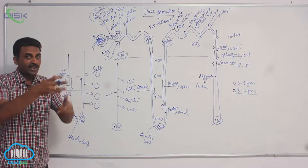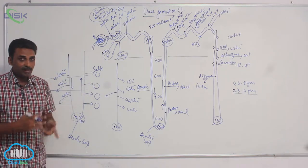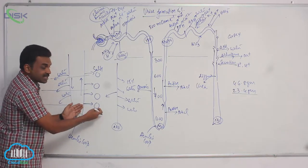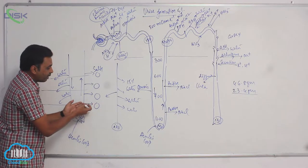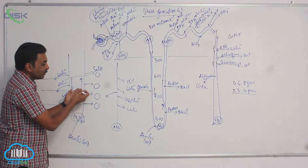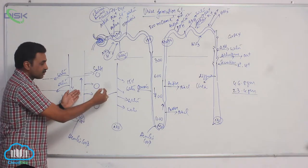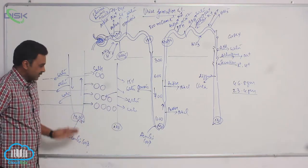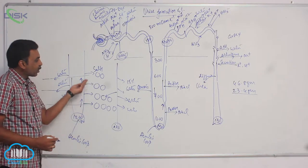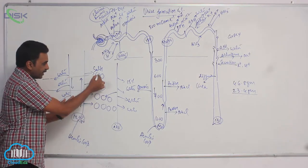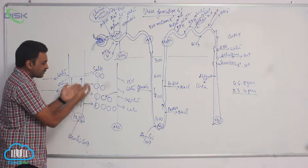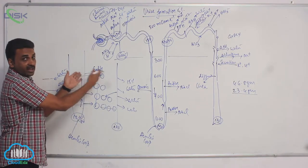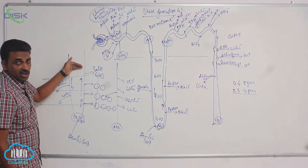The salts are deliberately maintained by active transport in the medullary interstitium. As fluid moves down the ascending limb, salts are moved out at each level. When the fluid continues moving further, more salts are produced at deeper regions, while fewer salts come outside in the upper region. So in the outer region there will be less salt concentration.